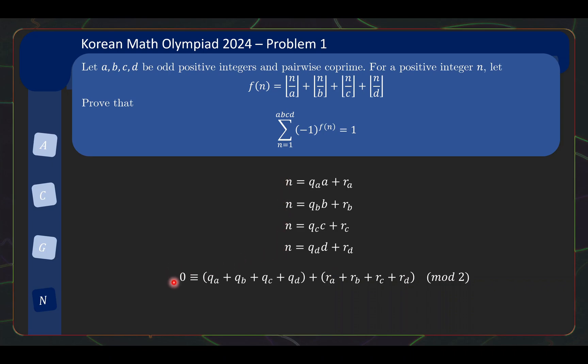And then what you realize is that if you sum these four equations together, the left side you get 4n, which is definitely even. And then the right side, a, b, c, d are odd, so under mod 2 they are all 1. So you actually get the sum of the quotients plus the sum of the remainder. And why do we do this? This is to tell us that the parity of the sum of the quotients, which is f(n) over here, is actually the same as the parity of the sum of the remainders.